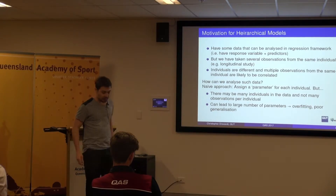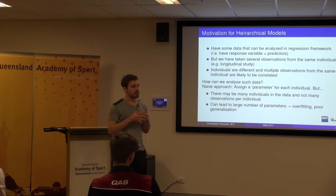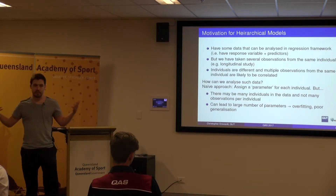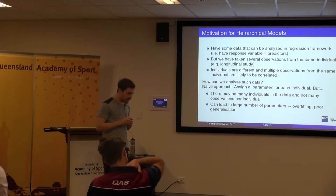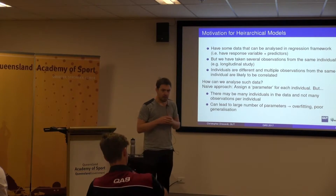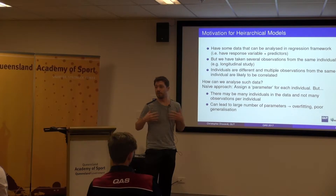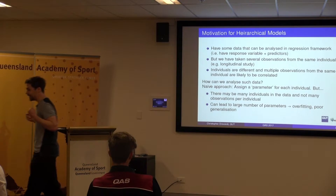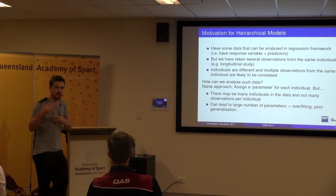But we have this challenge: we may have several individuals in our data set and we may also collect multiple observations on all of those individuals. So we're going to get some additional variability because all individuals are different — data I collect from you is going to be different to data collected from me. Furthermore, there's going to be correlation in the observations for each individual. So it's important that when we're forming our statistical models, we account for these features in the data set.